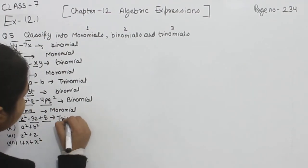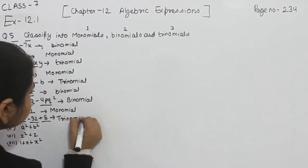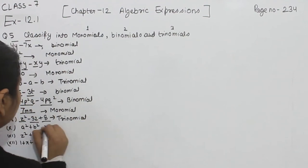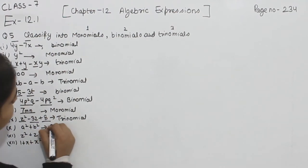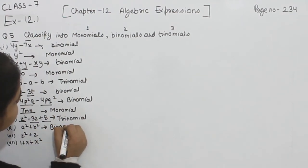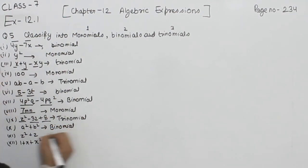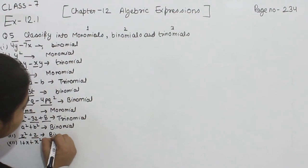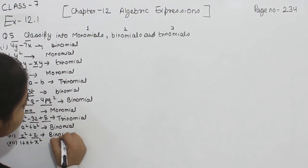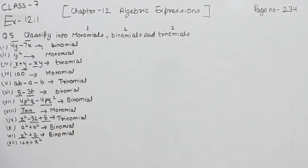Trinomial. Now the next one: a square plus b square — we are having two terms, first one is a square, second one is b square, so we are going to write here binomial. Now z square plus z — this one is one term and this one is another, we are having two terms.